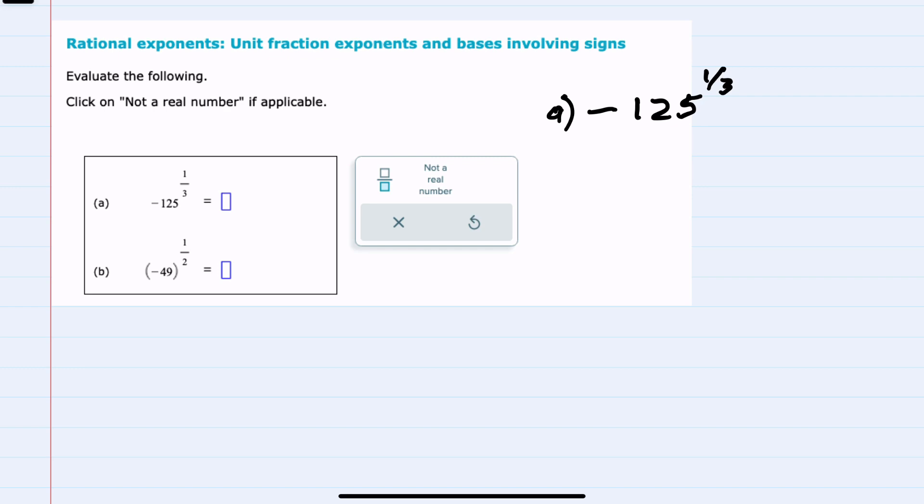I'd like to start by rewriting this as negative the third root of 125. Since there are no parentheses around that negative, it stays on the outside. We're only taking the third root of the 125.